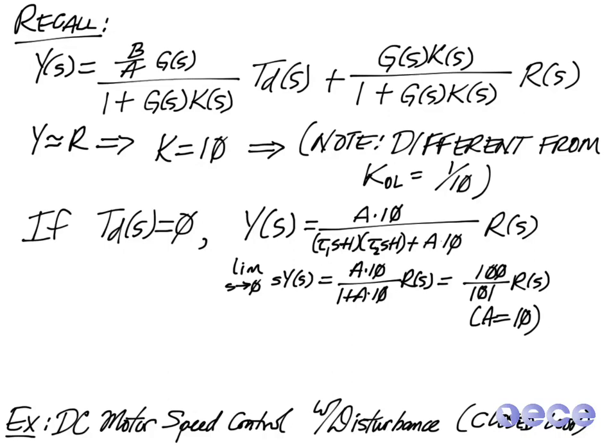So 100 divided by 101 is approximately equal to 1. So by choosing this, we're going to get the final output for Y of infinity to be approximately equal to whatever R of s happens to be.